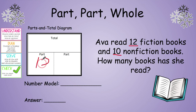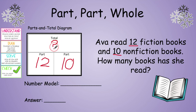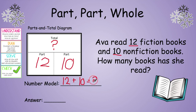One part would be 12 fiction. The other part would be 10 nonfiction. Did they tell us a total number? No — that's what we're searching for; that's our unknown. So let's come up with a number model: 12 fiction books plus 10 nonfiction books will tell us how many books she's read in all, which for now is a question mark.